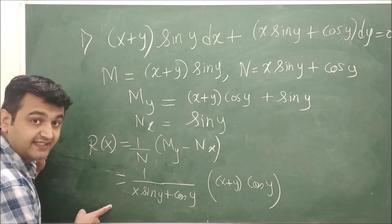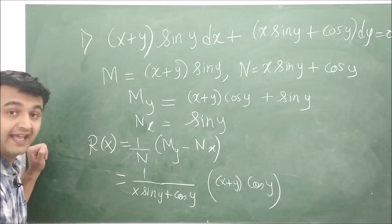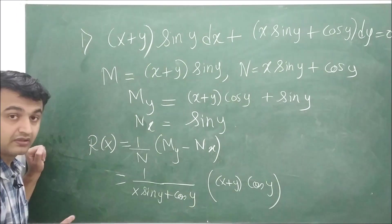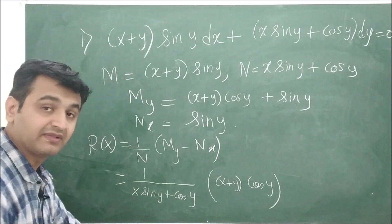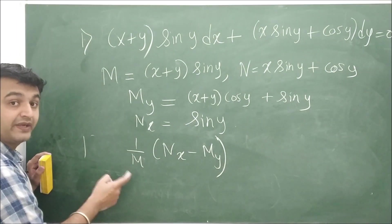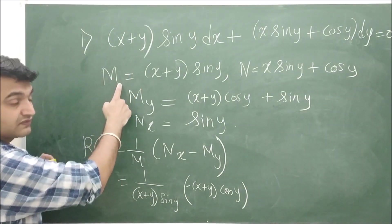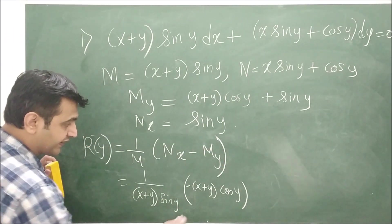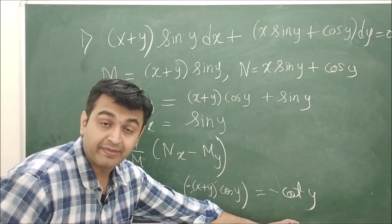Applying Method 1, r(x) = (1/N)(∂M/∂y − ∂N/∂x) comes out to be (x + y cos y)/(x sin y + cos y), which is not independent of y since y terms appear. So Method 1 fails and we switch to Method 2: compute (1/M)(∂N/∂x − ∂M/∂y). After simplification, the (x + y) terms cancel and we obtain −cot y, which is independent of x.